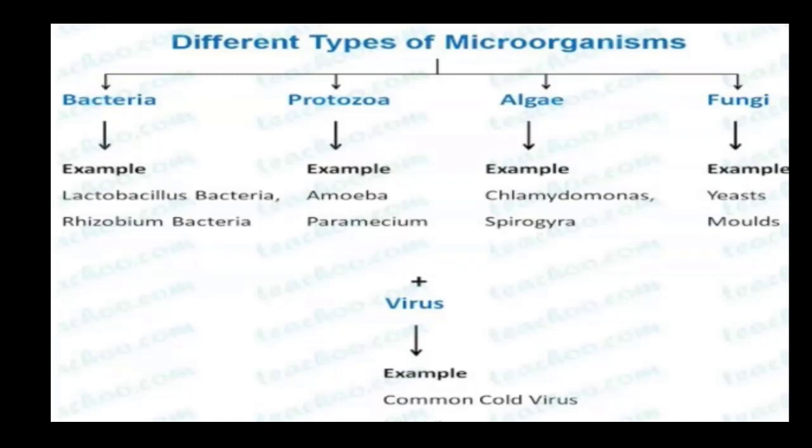The coronavirus is also a type of virus, which is a microorganism. We cannot see the coronavirus with the naked eye either — it is also a type of microorganism. These are the five types of microorganisms.